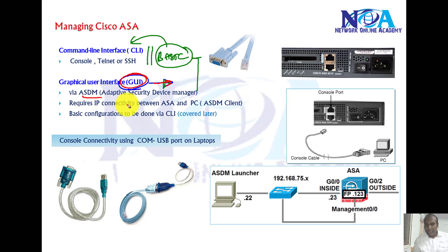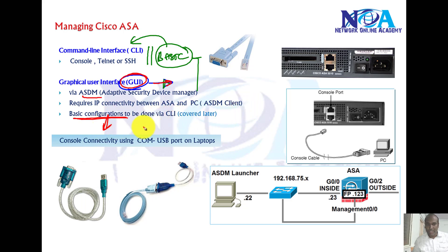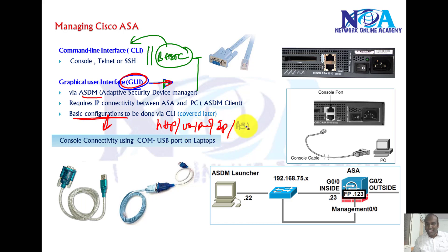The GUI management tool is called ASDM — the Adaptive Security Device Manager. To support ASDM, we need to do some basic configurations on the ASA: enable HTTP services, configure a username and password, ensure IP connectivity, and have the ASDM file installed in the flash memory.